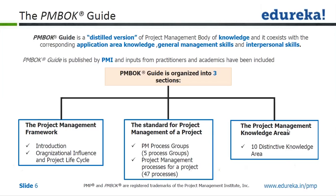Then you have 10 distinct knowledge areas, ranging from integration, cost, and time to scope all the way through to stakeholder management. So these three numbers are what you need to remember — and by the end of this course you will: 5 process groups, 47 processes, and 10 distinct knowledge areas. That shouldn't be a problem.